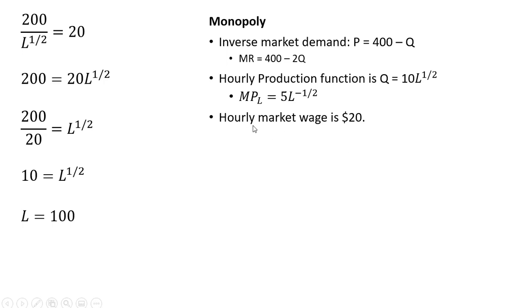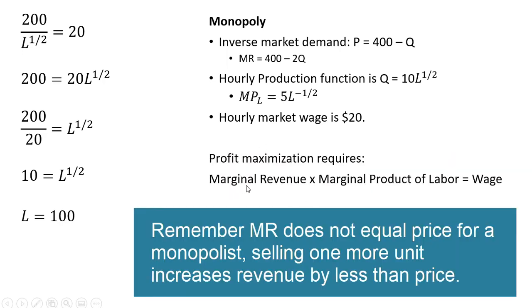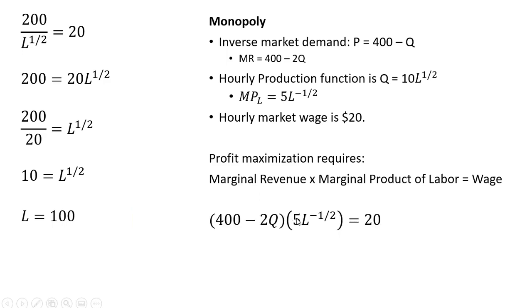And the hourly market wage that this monopolist pays is $20. Profit maximization requires here the marginal revenue multiplied by the marginal product of labor equals the wage. So we're going to use the marginal revenue here. So making our substitutions for the marginal revenue and for the marginal product of labor. And now set that equal to the wage. And now it's a matter of simplifying this.